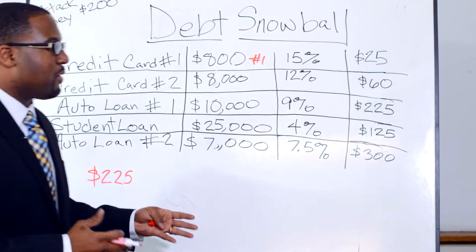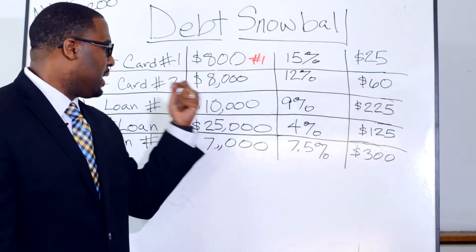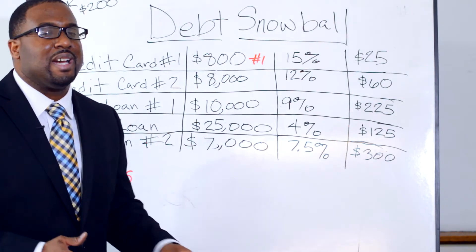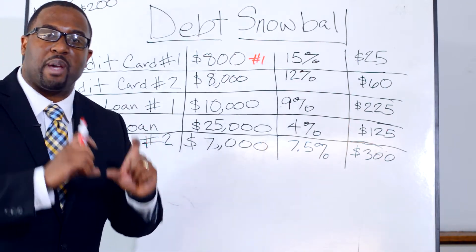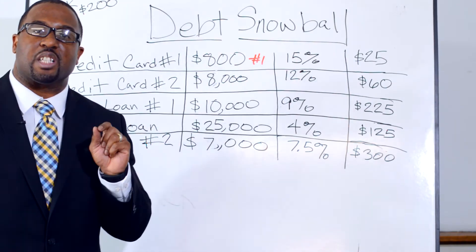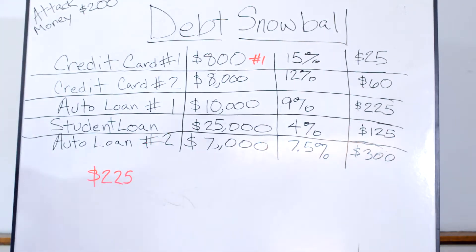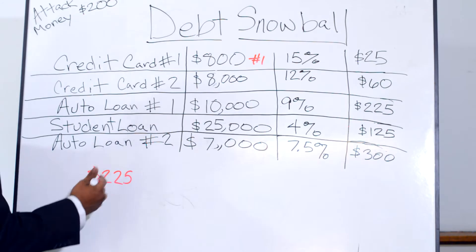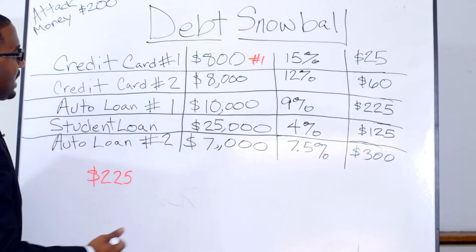With the debt snowball method, we are not paying any additional money on our other debts. Some of you may have been giving your other credit cards, your car company, or your student loans a little bit more money — that's fine. However, with the debt snowball method, you only want to pay the minimum payment on everything besides the smallest debt. So John is paying $225 on credit card one every month until it's done.